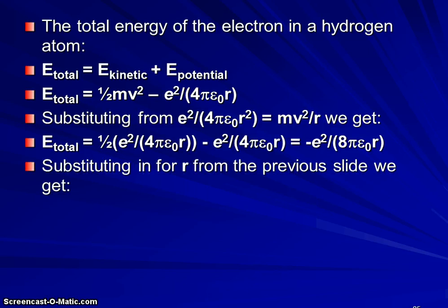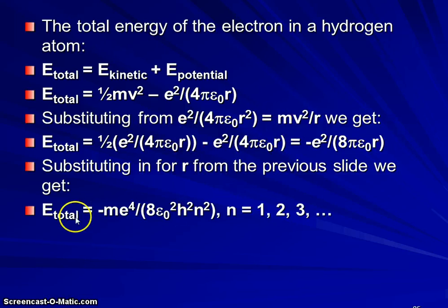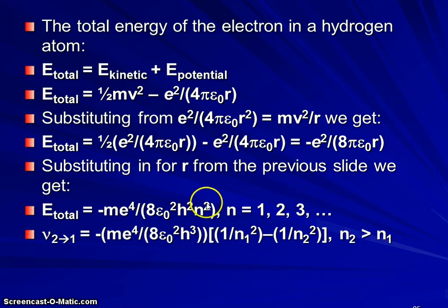Now on the previous slide, we just solved for r. So what we can do is substitute in what we solved for r on that previous slide and do some rearranging. And we get the energy of an electron has to be negative mass of the electron times the charge of an electron to the fourth power over eight times the square of the permittivity of free space times Planck's constant squared times n squared.